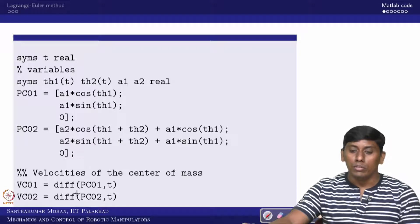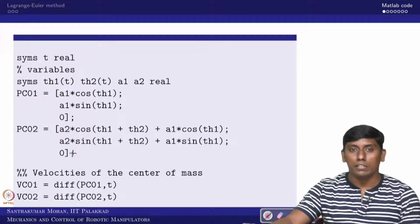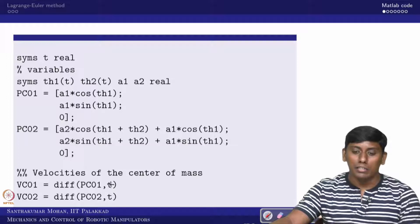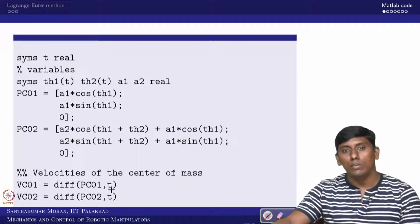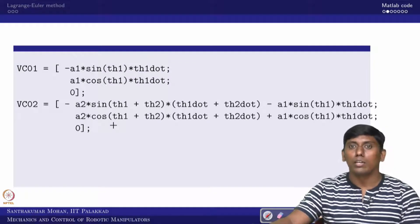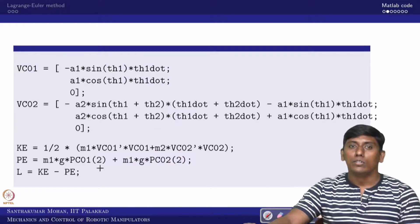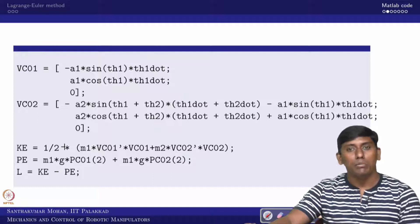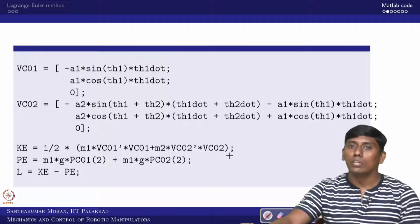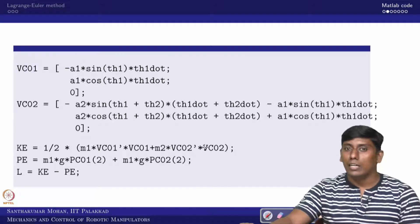We can obtain the velocity of the centers of mass by simply taking the time differentiation. In MATLAB I use the 'diff' command: diff(PC01, time), differentiating PC01 with respect to time. This gives VC01 and VC02, the velocity values. We rewrite these in terms of theta1_dot and theta2_dot. The kinetic energy is then (1/2) * M * VC01' * VC01, and similarly for the second link. Since there is no rotational kinetic energy, only translational kinetic energy is taken.